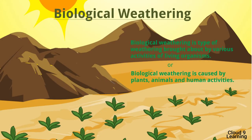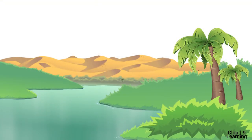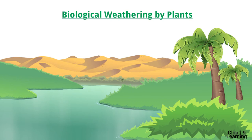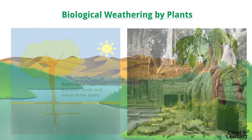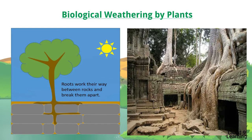Now we will study the third type of weathering — Biological Weathering. Biological weathering is brought about by various activities of living organisms, mainly plants, animals, and human activities. Regarding biological weathering by plants: many of you might have visited a fort and seen trees growing on their minarets, and pieces of rocks getting separated because of the roots of the trees. The roots grow bigger, create tension in the rocks, and start breaking them.